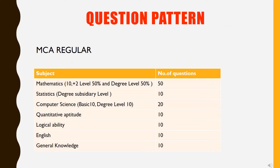The question pattern is that MCA Regular requires not 50 percentage but 40 percentage. Mathematics is a mix. If you learn at degree level, you can learn 50 percentage. Statistics is at degree subsidiary level. It is a regular pattern.